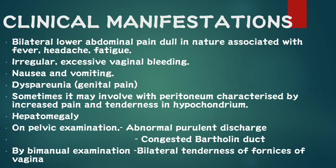The hypochondrium is one of the abdominal regions. As we know, the abdomen has nine quadrants, and the hypochondrium is one of them. On pelvic examination, findings include hepatomegaly, abnormal purulent discharge, congested Bartholin duct, and on bimanual examination, bilateral tenderness of the fornices of the vagina — that is, the superior part of the vagina.